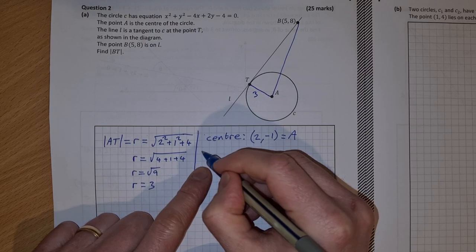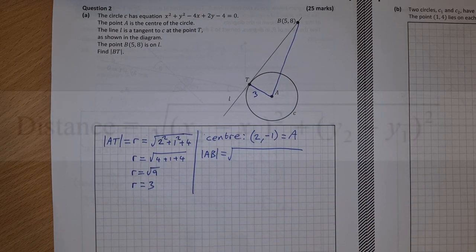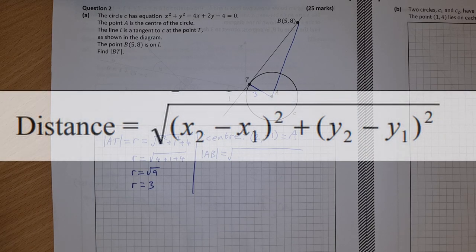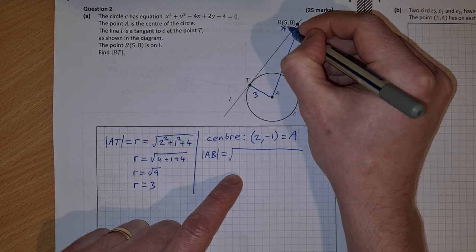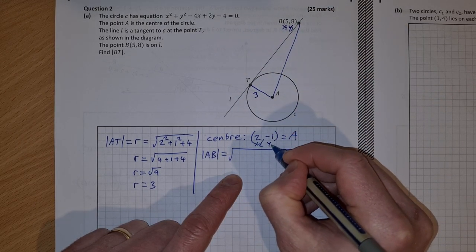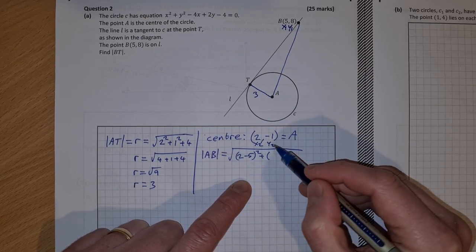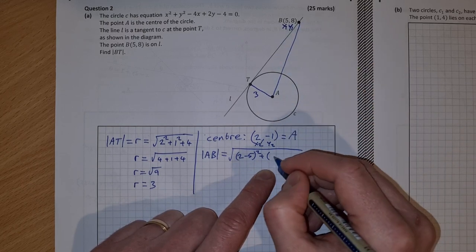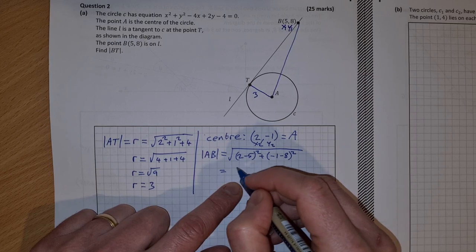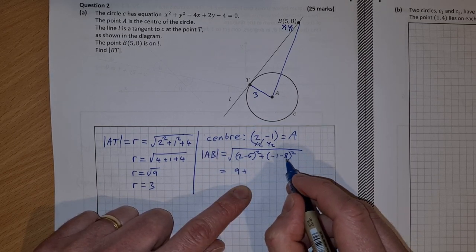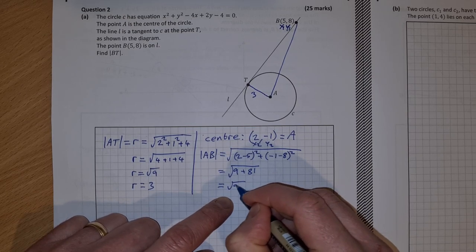To find the distance from A to B we use the distance formula: AB = √((x₂ - x₁)² + (y₂ - y₁)²). With A = (2, -1) as (x₁, y₁) and B = (5, 8) as (x₂, y₂), we get √((2 - 5)² + (-1 - 8)²) = √((-3)² + (-9)²) = √(9 + 81) = √90.